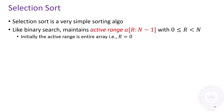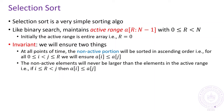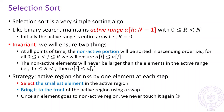Selection Sort maintains an active range which is initially the entire array. Note that the active region is always on the right hand side of the array. It also maintains two invariants. First, it ensures that elements outside of the active region are always sorted in increasing order. And second, it ensures that no element in the non-active region is ever larger than any element inside the active region. Selection Sort keeps shrinking the active region by selecting the smallest element in the active region and bringing it to the leftmost position of the active region. This act of selecting the smallest element in the active region is perhaps how this algorithm got its name.